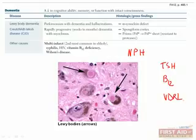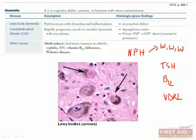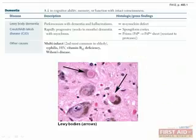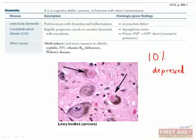The triad for normal pressure hydrocephalus is wet, wacky, and wobbly — standing for urinary incontinence, dementia, and gait abnormalities. This is one of the only dementias that is reversible, so it's important to do something about it. About 10% of patients who present with signs or symptoms of dementia are actually depressed — this is called pseudodementia. All patients with possible dementia should be screened for depressed mood, anhedonia, anorexia, weight loss, insomnia or hypersomnia, as well as suicidality. Depression is treatable, and many other forms of dementia, sadly, are not.